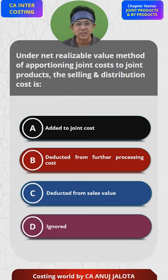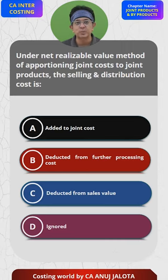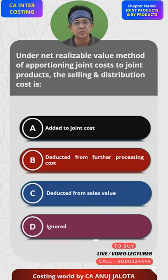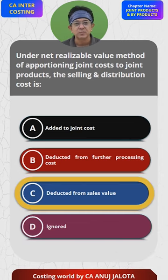So the correct answer should be C, because selling and distribution cost will be reduced from the sales value. Answer is C — that's the correct answer.